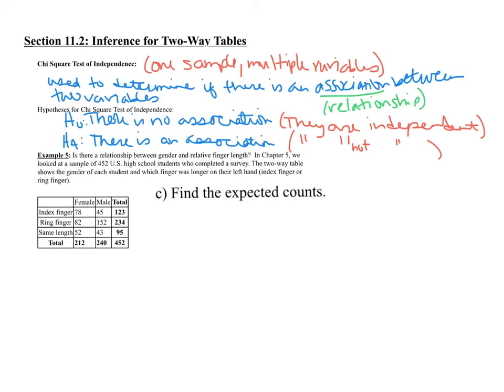Finding the expected counts, hopefully by now, will seem kind of familiar. For example, for the female ring finger, you would do 234 times 212 all over 452. When you do that, you end up getting 109.8-ish. Go ahead, I want you to do the rest on your own. Please pause the video and give it a try.